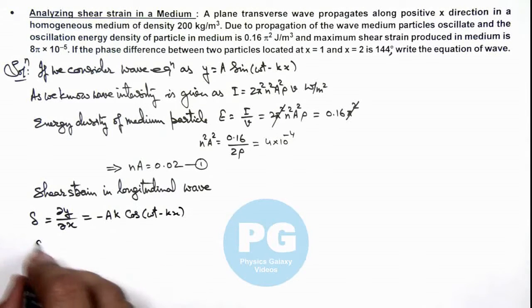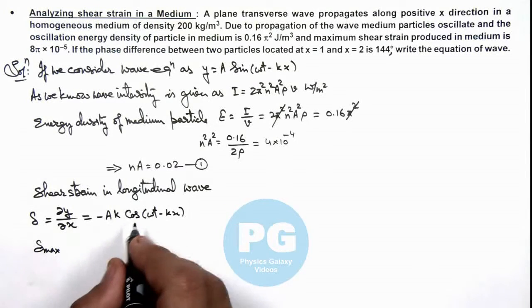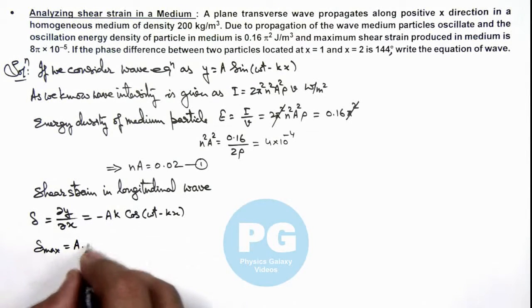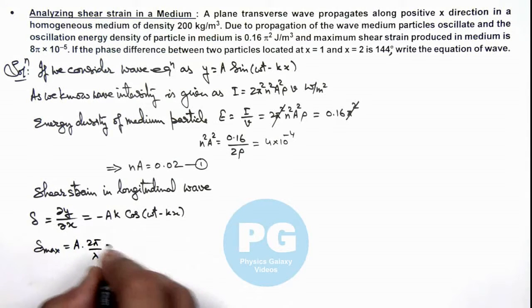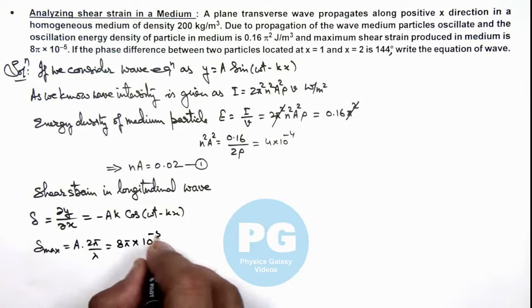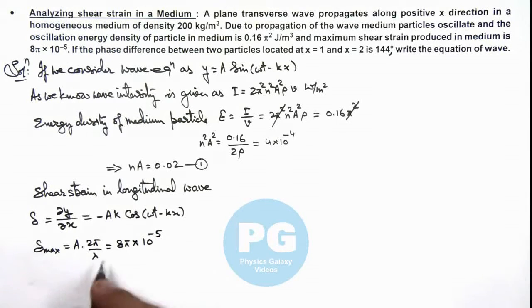And we are provided with the maximum shear strain in the medium, where longitudinal wave exists, is ay k, that is ay multiplied by 2π/λ, and that is equal to 8π × 10^-5. So on simplifying this we'll get the value of ay/λ equal to 4 × 10^-5. Say this is our second equation.